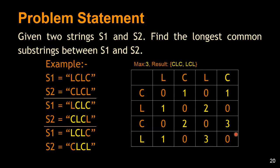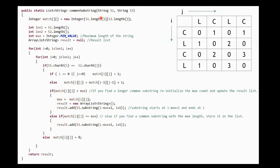Let's look at the code. There is a function which takes two strings s1 and s2. We define the match matrix as discussed, and we also maintain a max variable for the maximum length of the common substring and a result list. The outer loop goes along the rows and the inner loop goes along the columns. If we find a match in the first row or first column, we initialize the matrix cell to one.